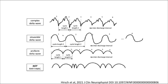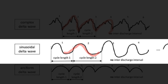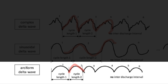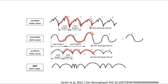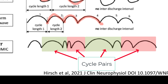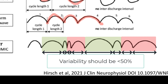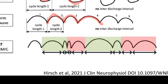Here are some conceptualizations of rhythmic delta activity. At the top is a pattern consisting of complex waveforms. Next is one that is more clearly sinusoidal with less complex morphology. Next is a pattern that is archiform — peaks followed by a sudden change in direction to produce an arch-shaped pattern. At the bottom is a pattern that would not be considered rhythmic. To assess rhythmicity, we look at cycle pairs, and rhythmicity is defined as cycle length varying by less than 50 percent for the majority of cycle pairs.